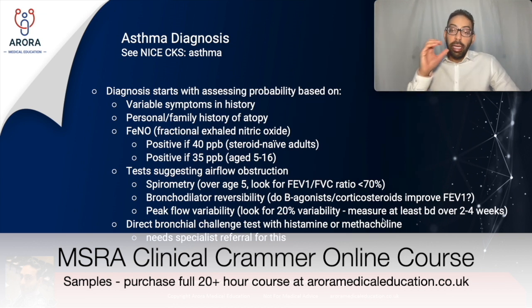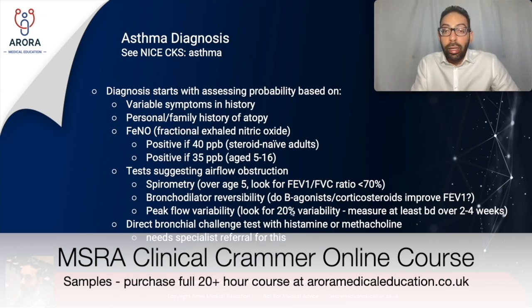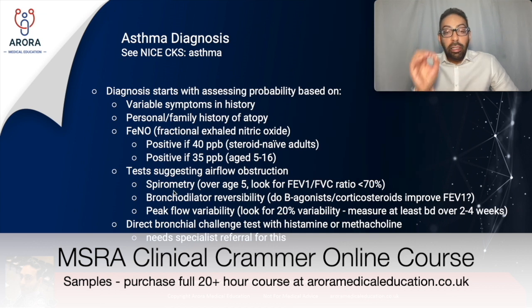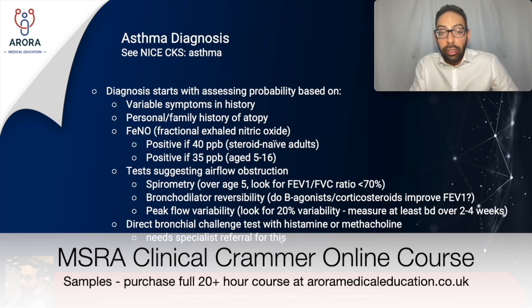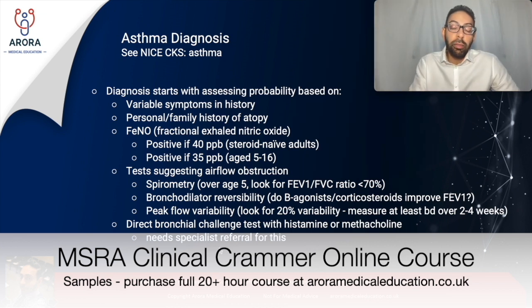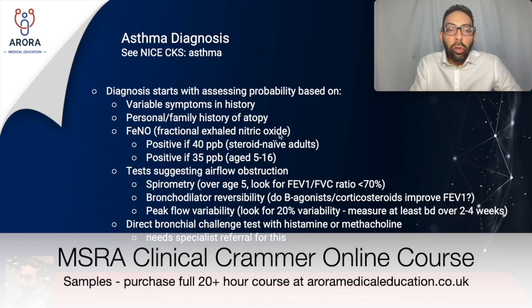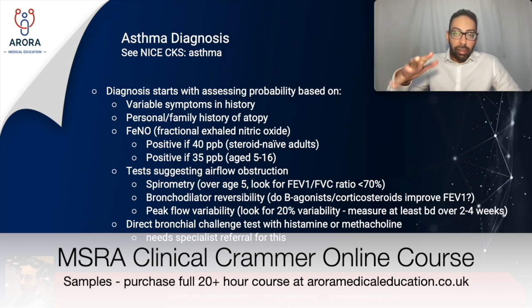For peak flow variability, ask the patient to measure their peak flow at least twice a day over a two to four week period, looking for 20% variability — if present, this increases the probability of asthma. Finally, direct bronchial challenge testing with histamine or methacholine requires a specialist respiratory team referral, but results may be presented in a question. All five factors are considered together to determine whether asthma probability is likely, intermediate, or unlikely, guiding next steps.